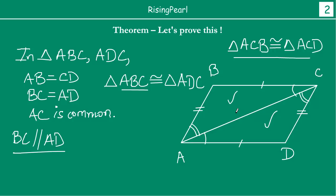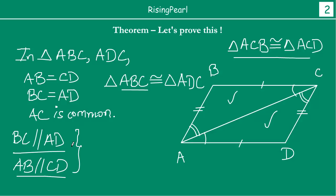At this point, in quadrilateral ABCD we have BC parallel to AD, and BC equals AD. So we know that this is a parallelogram — if one pair of opposite sides are equal and parallel, then we can say it is a parallelogram. Alternatively, similarly, if you consider angle BAC and angle DCA, these two angles are also equal. Between lines AB and CD, AC is a transversal such that alternate interior angles are equal, so AB is parallel to CD. Both approaches are correct.